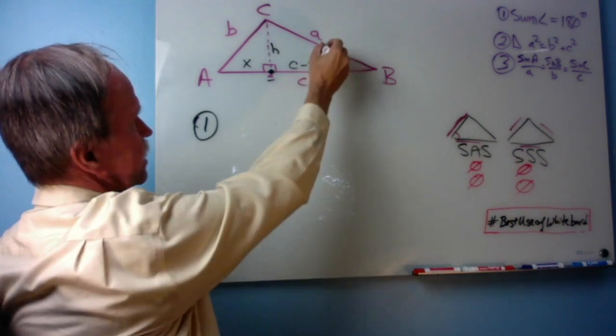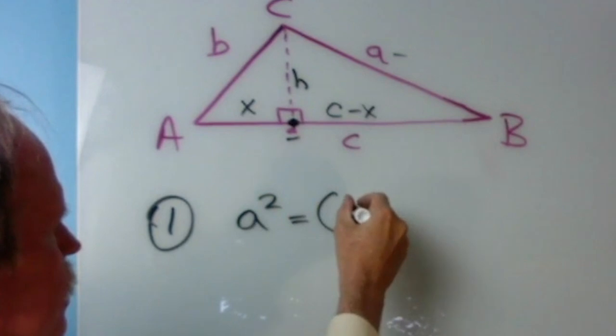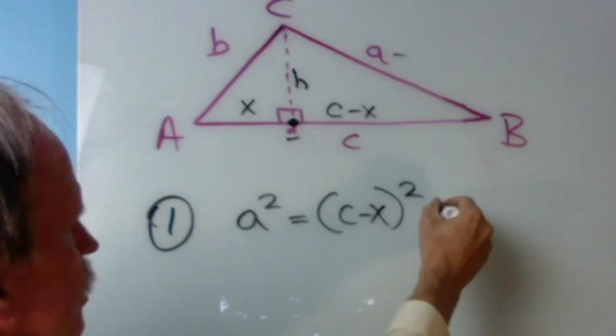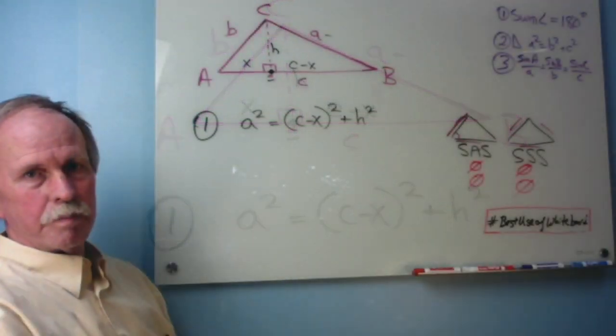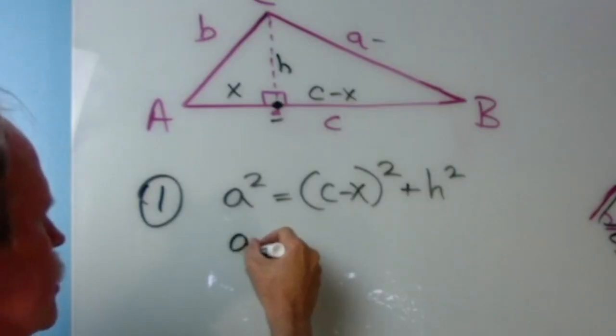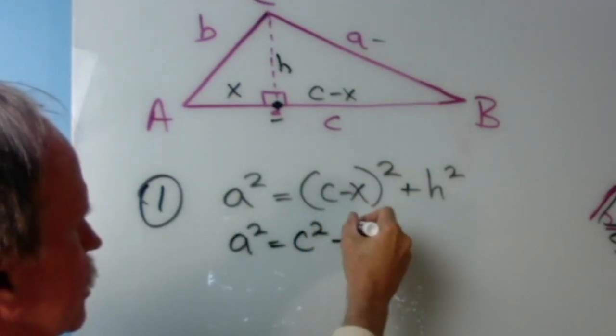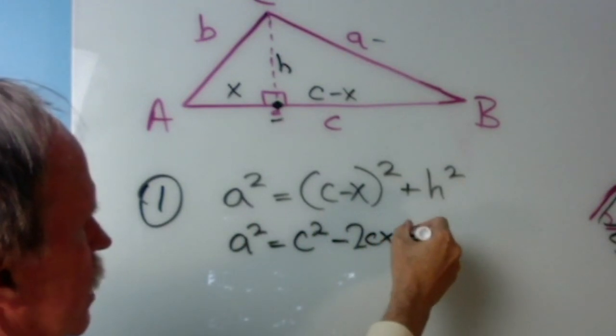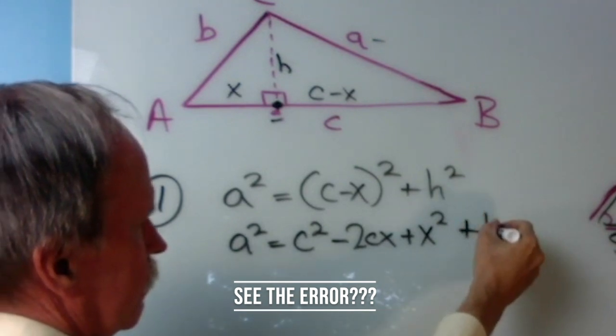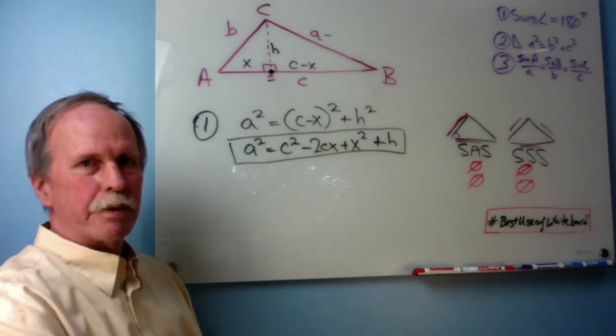Now, let's go ahead and have a look at this triangle right here. So, step one. That's the hypotenuse, right? A squared equals C minus X squared plus H squared. Pretty straightforward, right? Now, let's go ahead and multiply that out. A squared equals C squared minus 2CX plus X squared plus H squared.